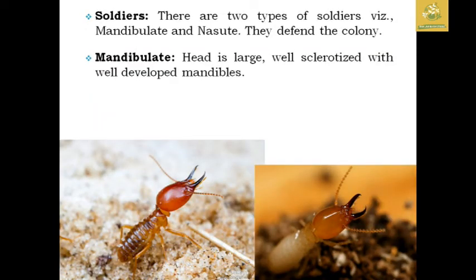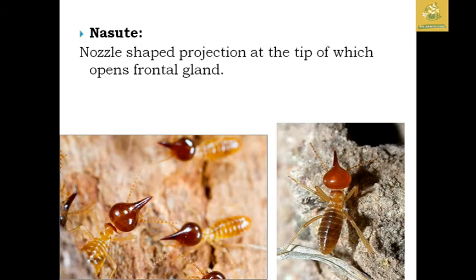Regarding soldiers, there are two types: mandibulate and nasute. They are used for defending the colony. The mandibulate soldier has a large, well-sclerotized head with well-developed mandibles. The nasute soldier has a nozzle-shaped projection at the tip of the head and contains frontal glands in the head.